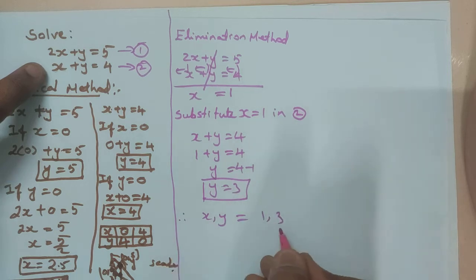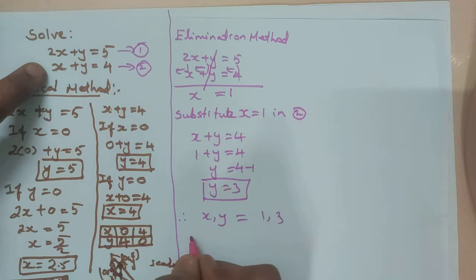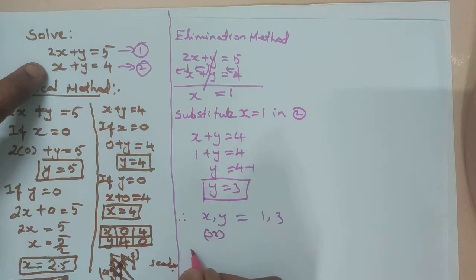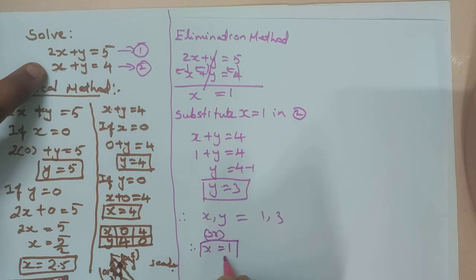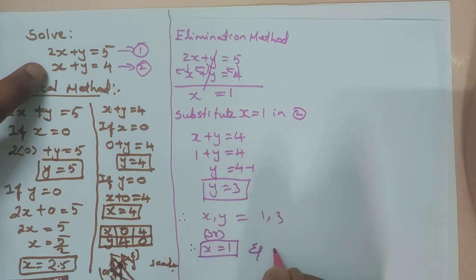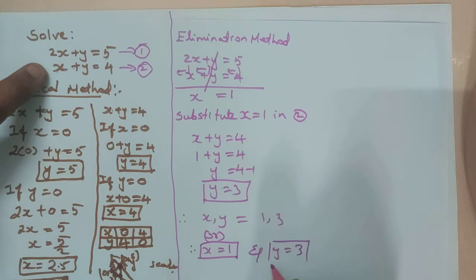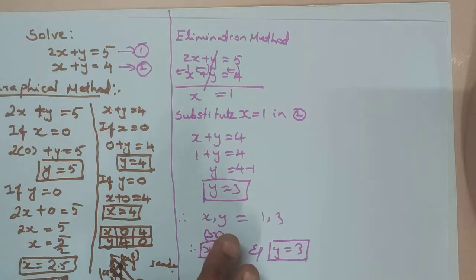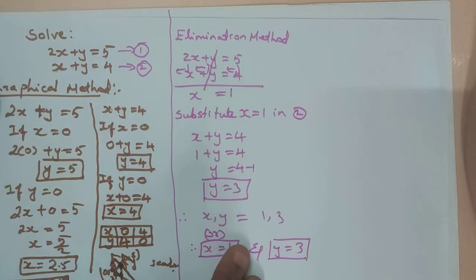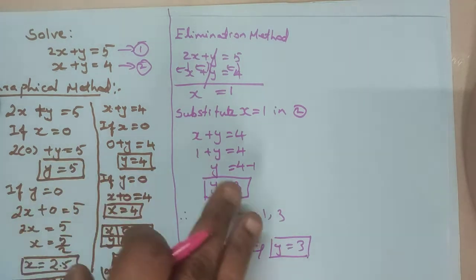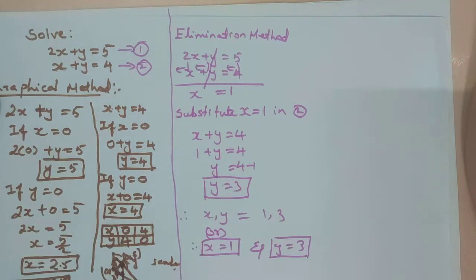Or you can write: therefore x is equal to 1 and y is equal to 3. This is the solution by elimination method.